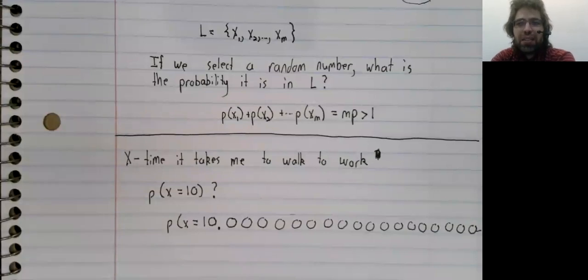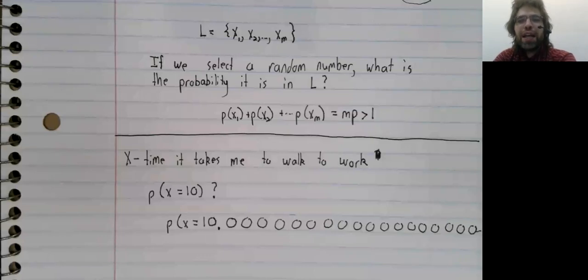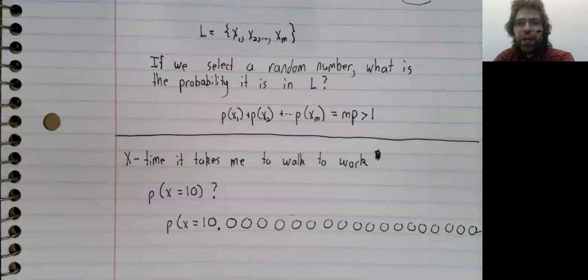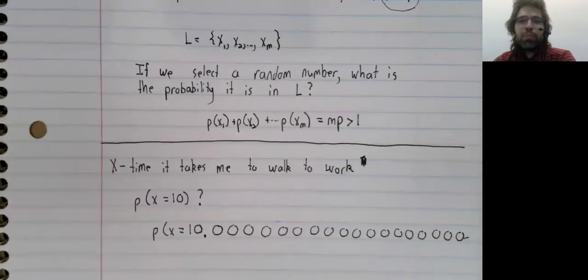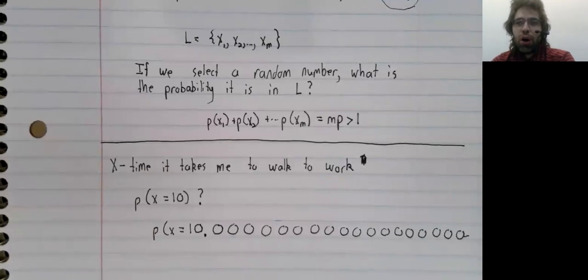So it does make sense to say that an event has probability zero. Now, this does slightly - what's the word I'm looking for - run counter to our intuition, in the sense that I will walk to work on Monday and it will take me some number of minutes, and the probability that it takes me that number of minutes will be zero.